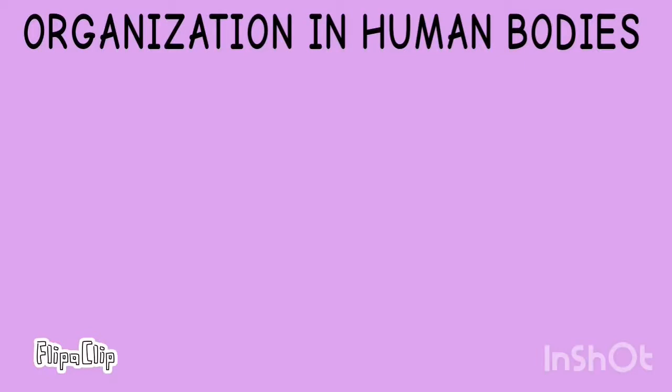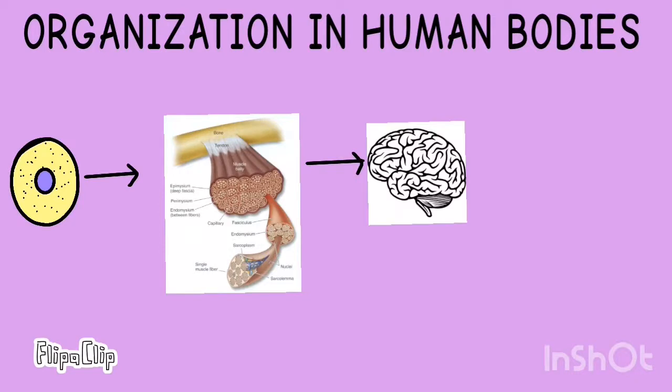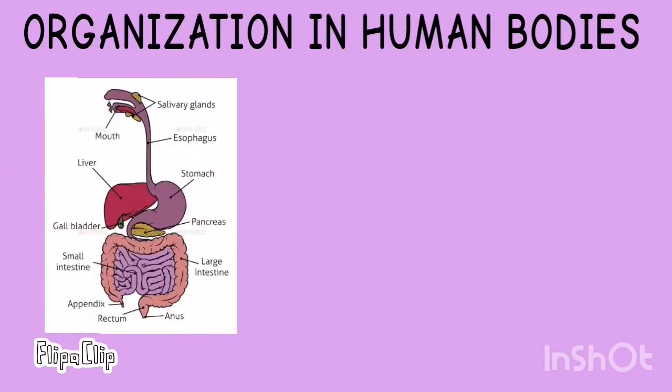A cell forms tissue. A tissue forms an organ. An organ forms an organ system. An organ system forms an organism.